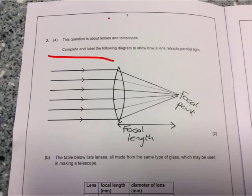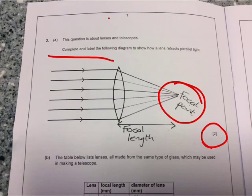Because the convex lens has different thicknesses, it will refract the light by different amounts, bringing them to a focal point. In order to get the two marks, you need to not only draw on the rays of light and where the focal point is, but you need to label it. So either label focal point or the distance from the lens to the focal point as the focal length in order to ensure you get the maximum two marks.